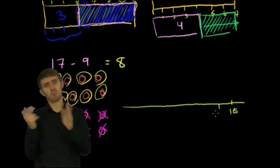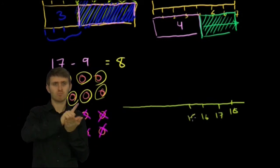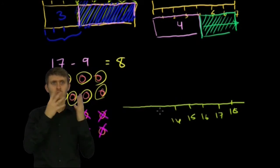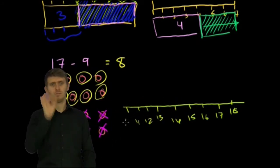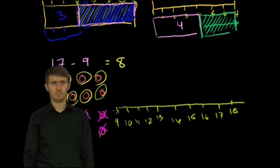So if we draw the number line, let's say this is 18, 17, 16, 15, 14, 13, 12, 11, 10, 9, 8, 7. You could imagine I could keep going to the left all the way to 0.